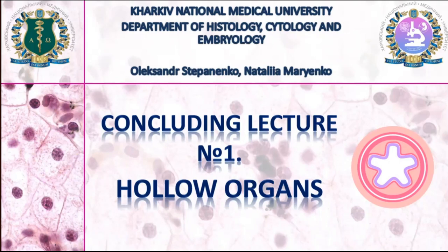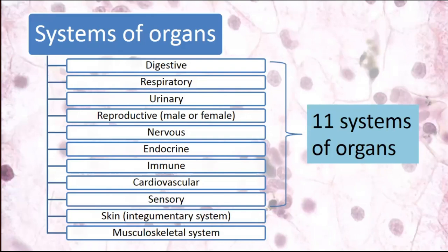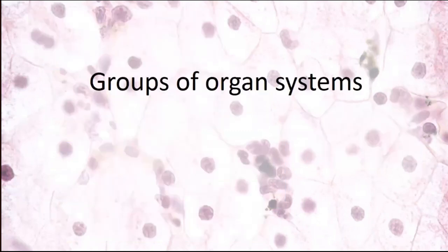Today we'll have our first concluding lecture. This lecture is about hollow organs, and today we'll compare different organs of different systems. We studied different systems individually and now we'll compare and find the similarities between them. We can see different systems of organs present in our body: digestive, respiratory, urinary, reproductive (male or female), nervous, endocrine, immune, cardiovascular, sensory, skin or integumentary, and musculoskeletal system. We can divide all these systems into some groups.